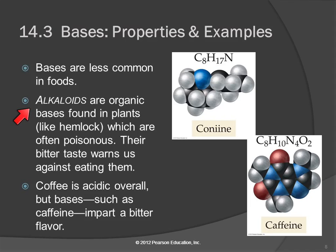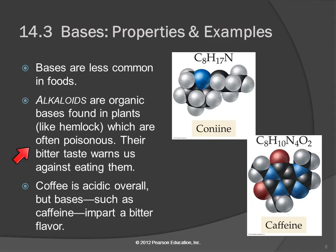Alkaloids are organic bases that are found in plants. Have you heard of hemlock? Hemlock is poison — that's what Romeo and Juliet drank, and it killed them. So that bitter taste warns us: hey, don't eat that.